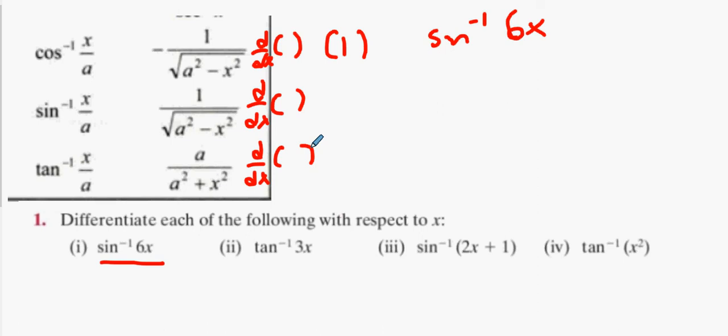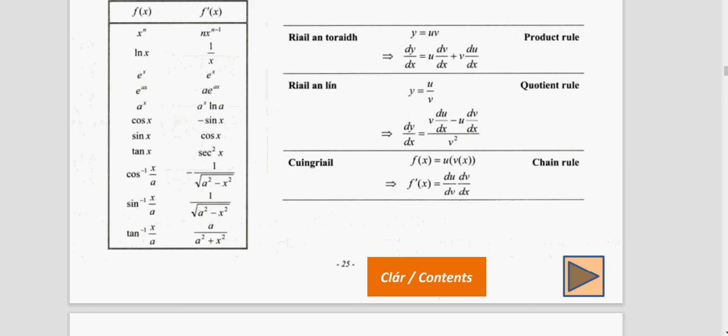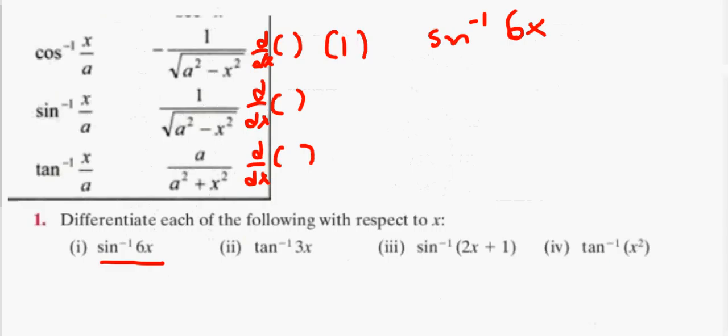So, we went to page 25 of your tables and we saw that cos inverse, sin inverse and tan inverse all have a specific differentiation formula. Now, we're currently on y equals sin inverse 6x. Which equation does that mean I'm going to be using? A, B, or C? I'm going to be using B all day long. Now, we'll look at B and here's the golden rule for this question. Always make A equal to 1.